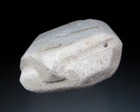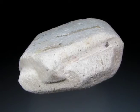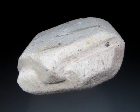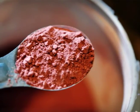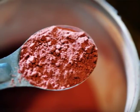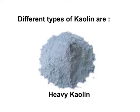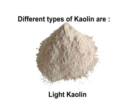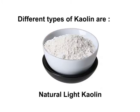Kaolin is a white soft plastic clay composed of well-ordered kaolinite with low iron content. In many parts of the world it is colored pink, orange or red by iron oxide, giving it a distinct rust hue. The different types of kaolin are: first, heavy kaolin — purified hydrated aluminium silicate powdered free from gritty particles by elutriation; light kaolin — identical to heavy kaolin but limited to a certain particle size and containing a suitable dispersing agent; and third, natural light kaolin — also a native hydrated aluminium silicate free from gritty particles but devoid of dispersing agent.